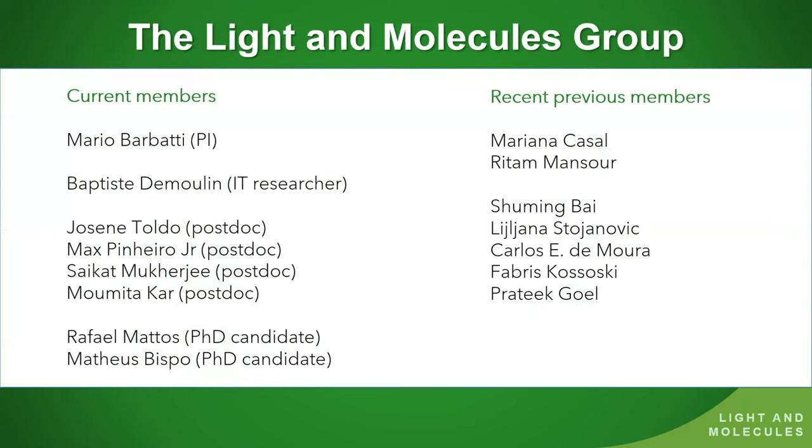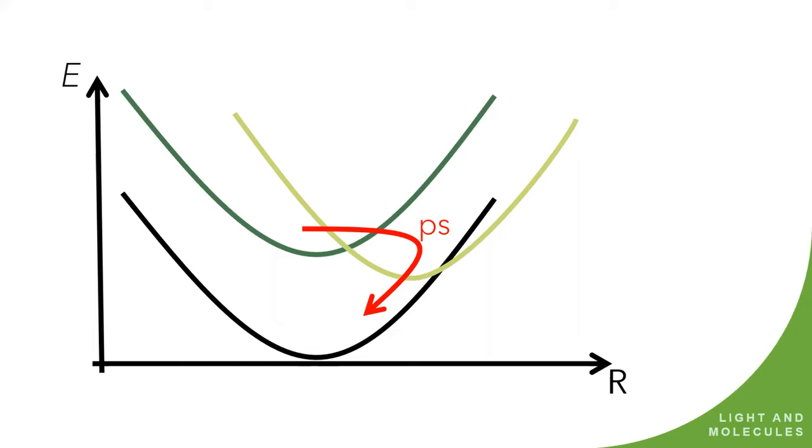Then you take these methods, implement them in a set of software. Maybe the best well-known is the Newton-X software for dynamics. And we use these methods and software for applications in photo processes in a large variety of fields. I would like to thank my group - at the left, the people currently in the group, and the right people that were there still recently. So I'm very glad for working with all those people, and most of them participated in one way or other in the work I'm going to show here today.